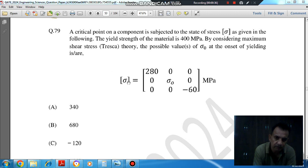Sigma stress vector: 280, 0, 0 first row; 0, sigma node, 0 second row; 0, 0, minus 60 MPa third row. So this is the stress vector. And these are the principals: 280, sigma node, and minus 60.